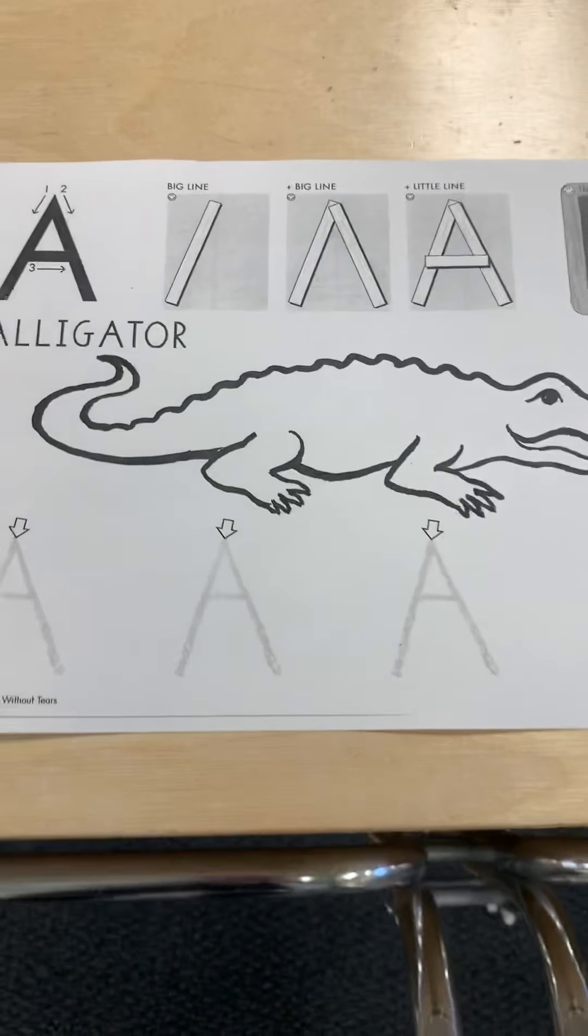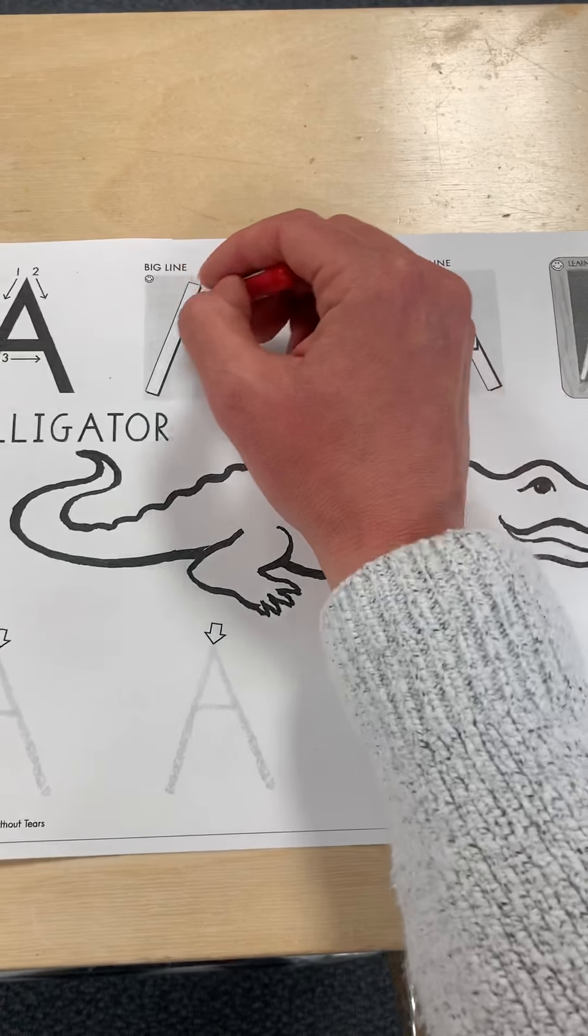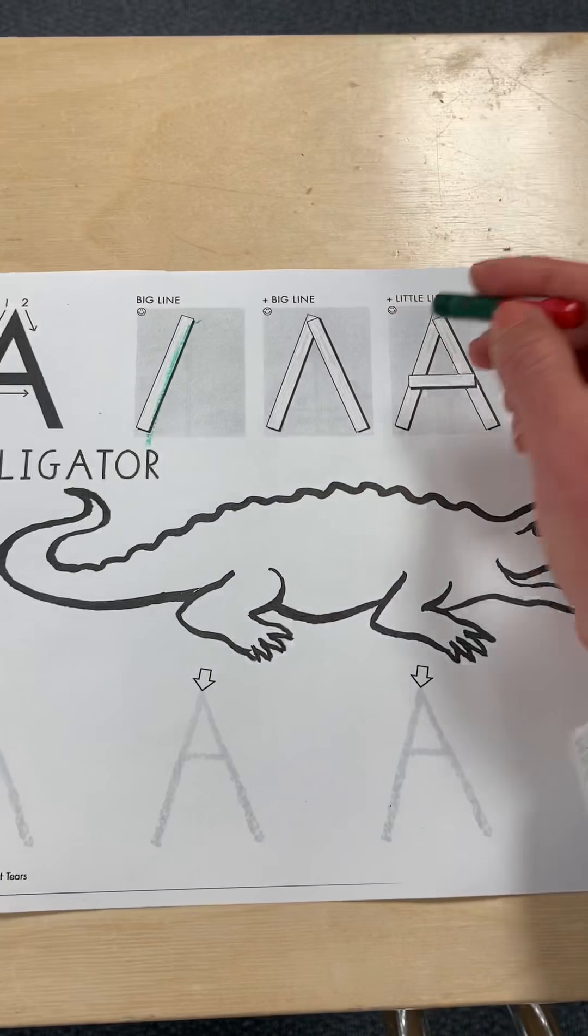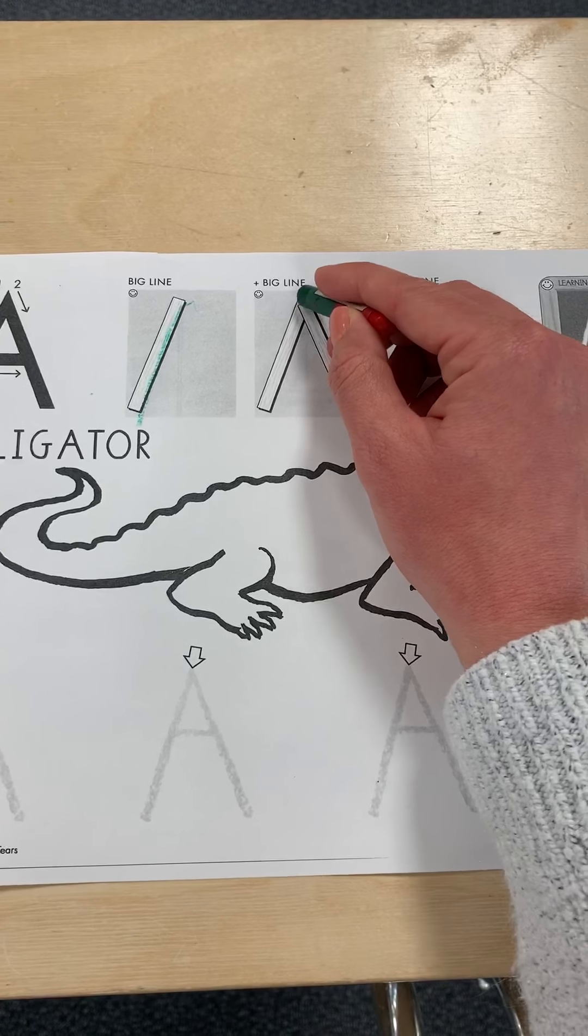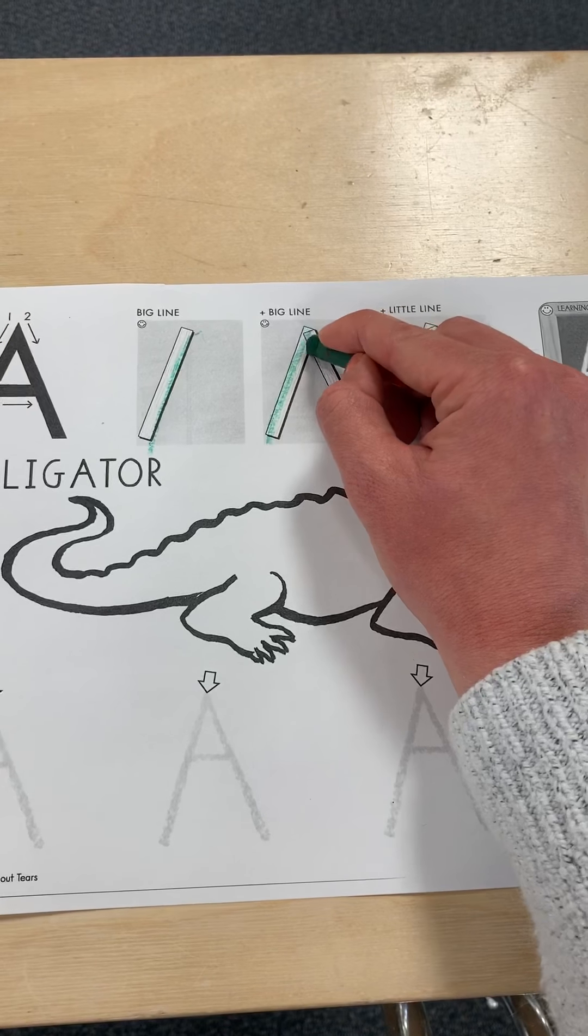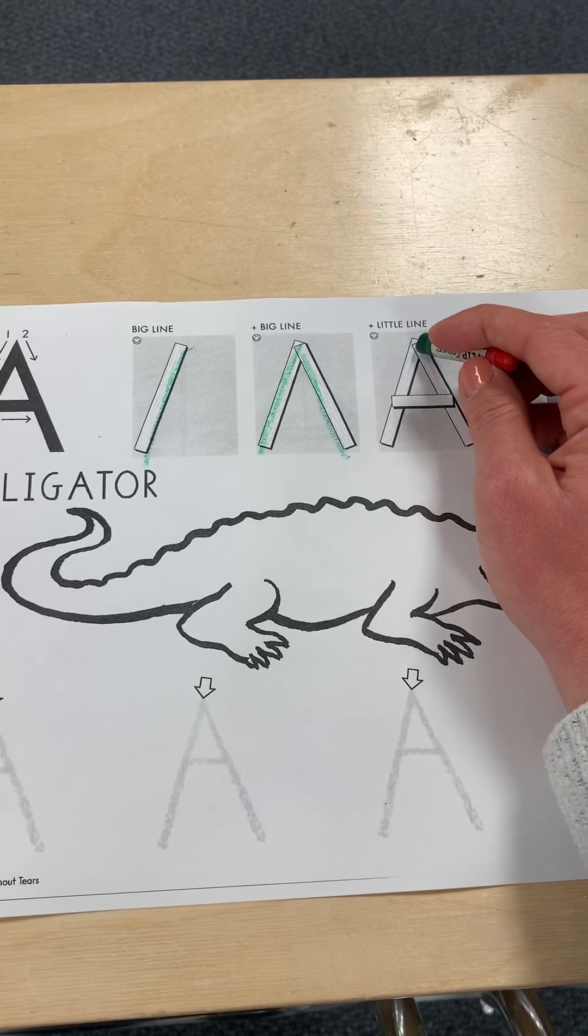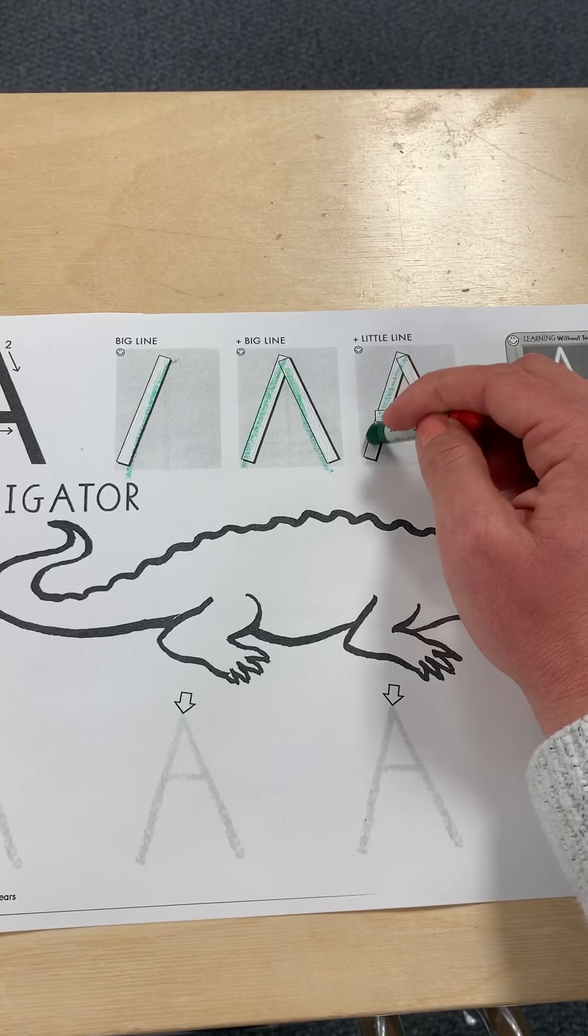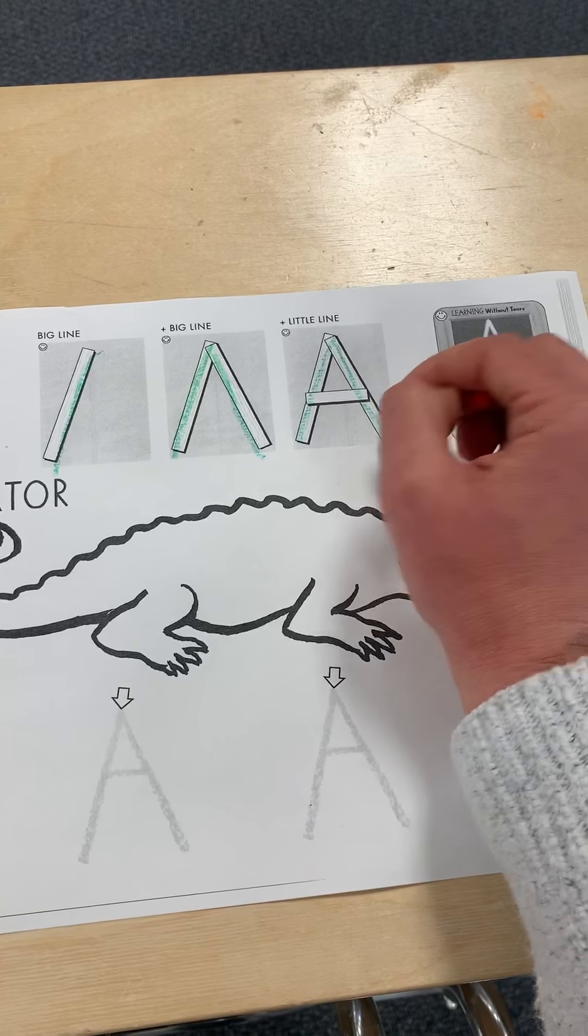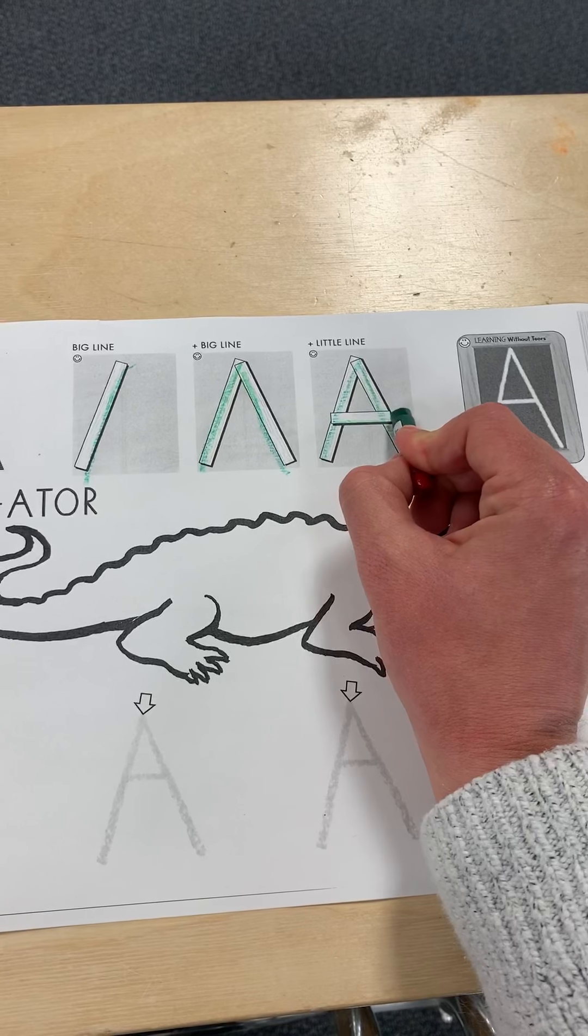Then you're gonna come over to your alligator worksheet and you're gonna start at the top. Big line down. Then you're gonna add another big line, so big line down. Jump to the top, big line down. Now you're gonna add the little lines. Big line down, jump to the top, big line down. Jump to the middle, little line across.